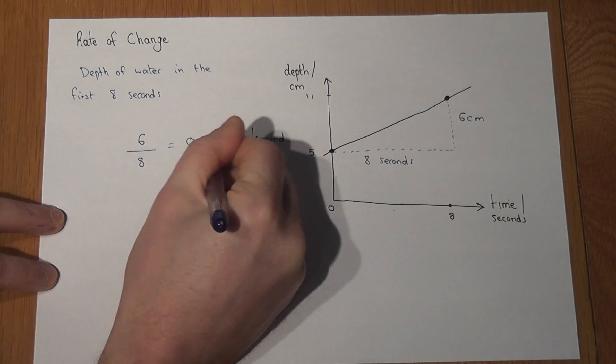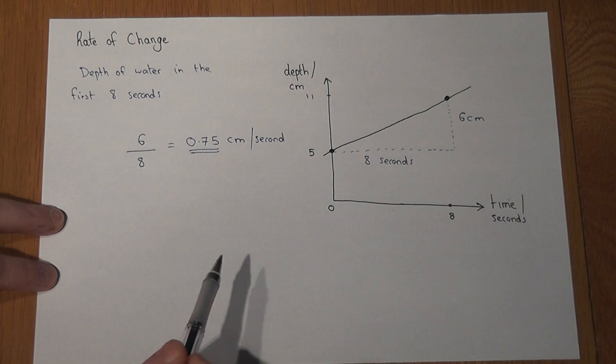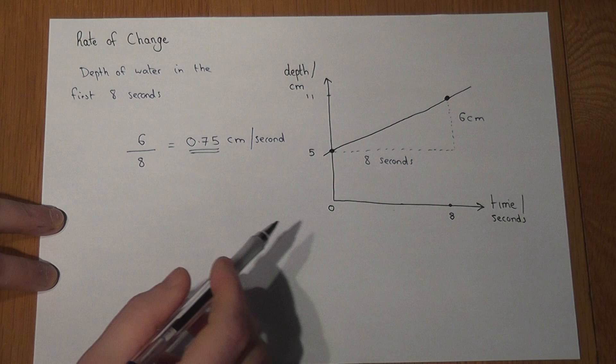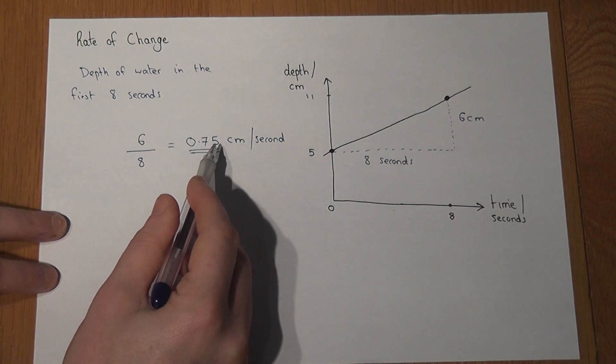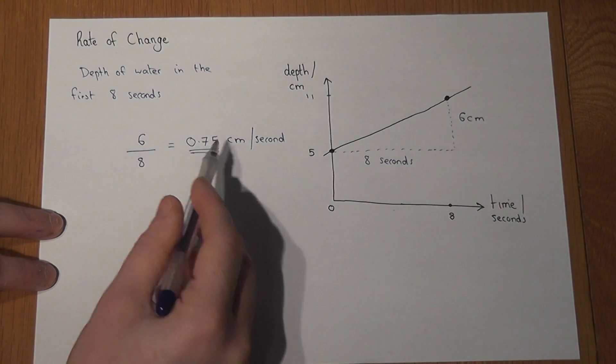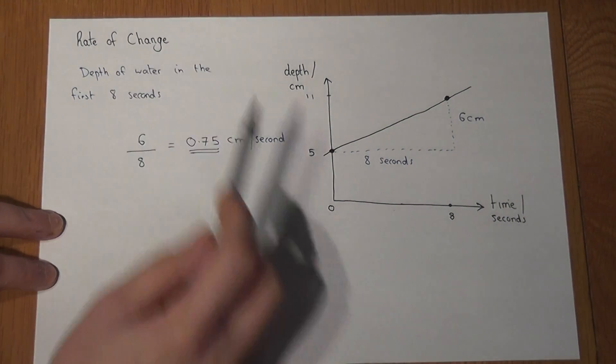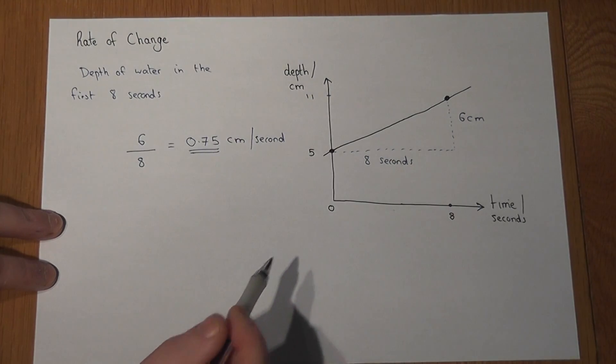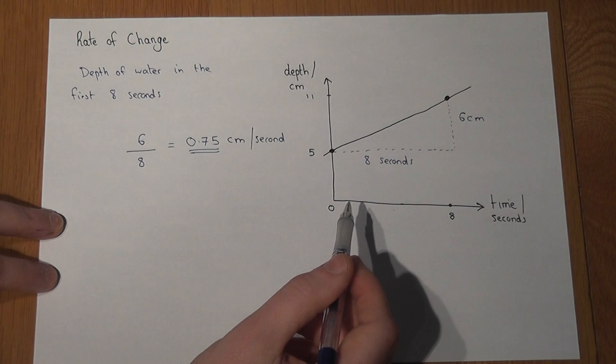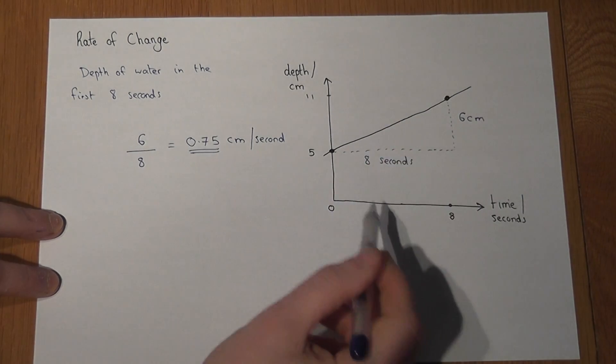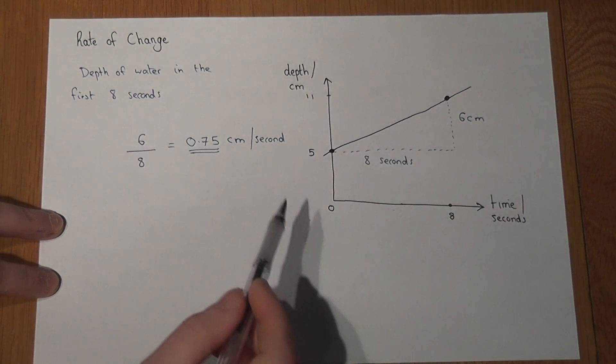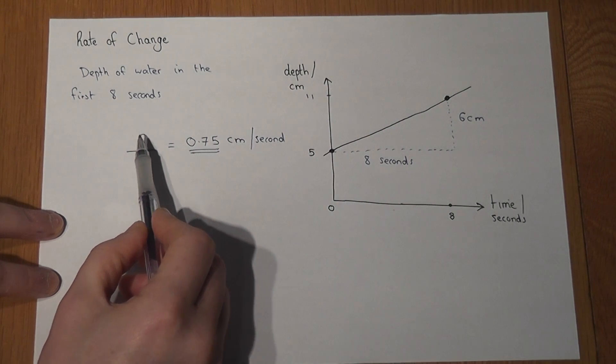What this means is that every second the depth of the water in the container went up by 0.75 of a centimeter. So again, if you're asked to find a rate of change we look at the gradient. We look at what it's increased by and how long it took, and we do the change in height over the time.